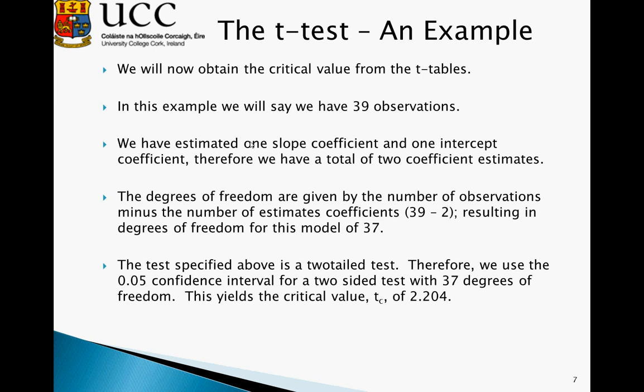The test specified above is a two-tail test. Therefore, we use 0.05 confidence intervals for a two-sided test for 37 degrees of freedom, and it yields a critical value from the t-tables of 2.024. So we will use this value when comparing our t-calculated.